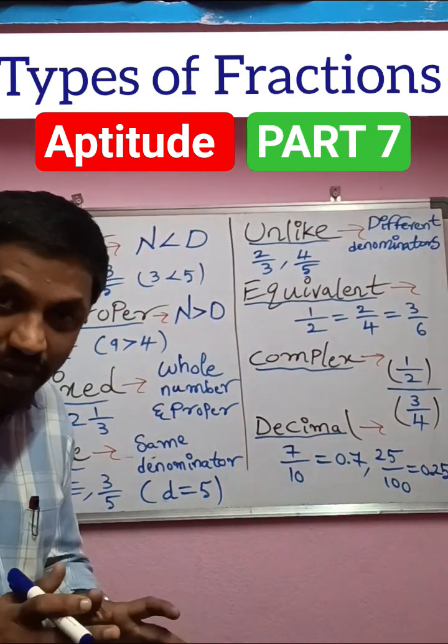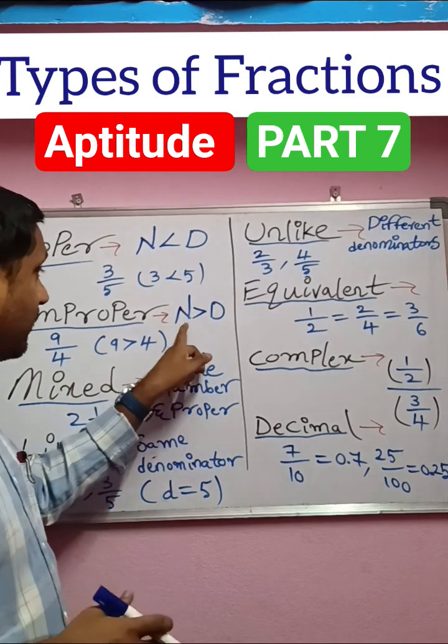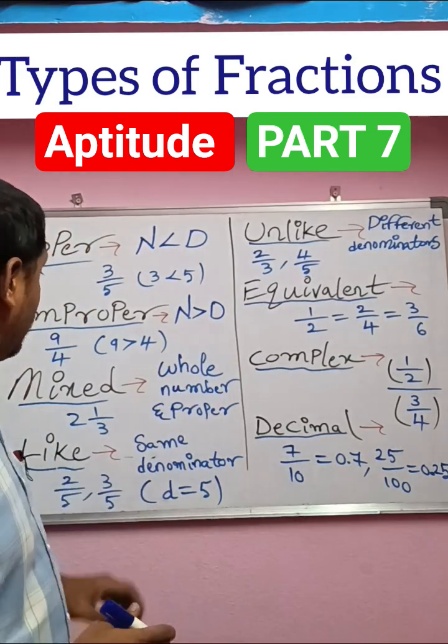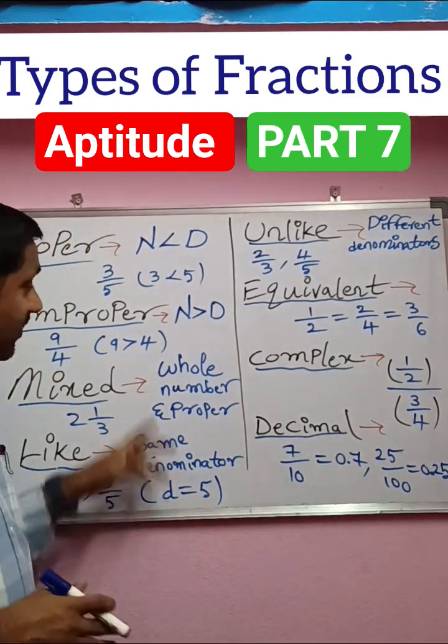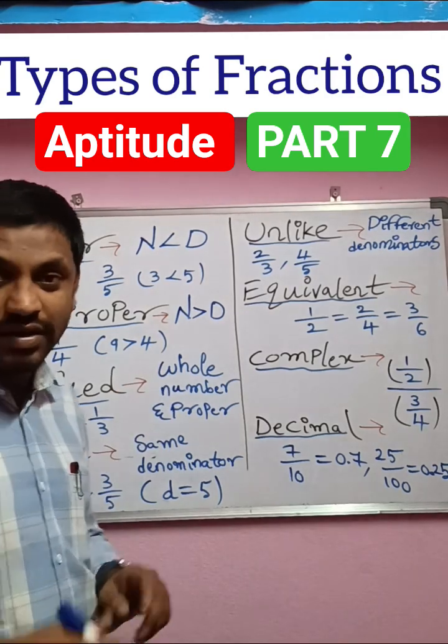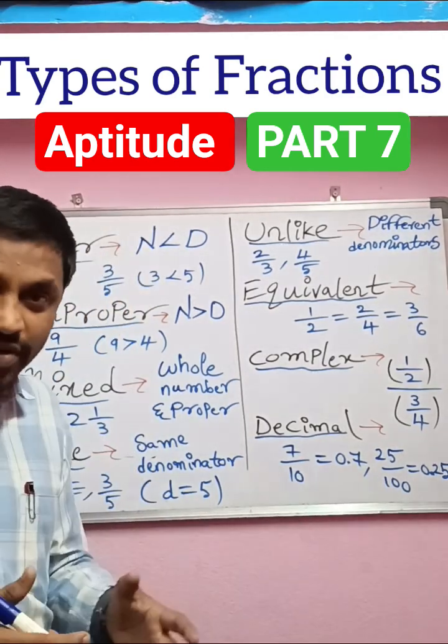Next is improper fraction. In this case, numerator is greater than denominator. For example, 9 by 4. 9 is greater than 4, then it is said to be improper fraction.